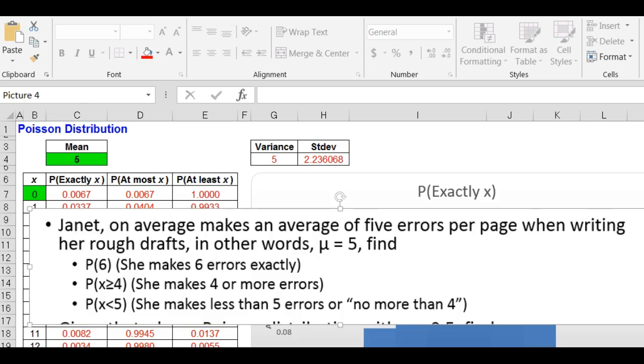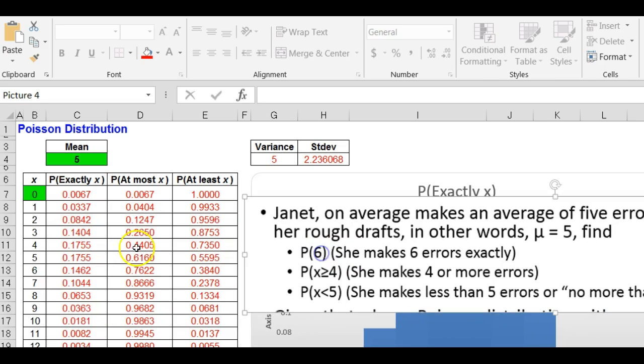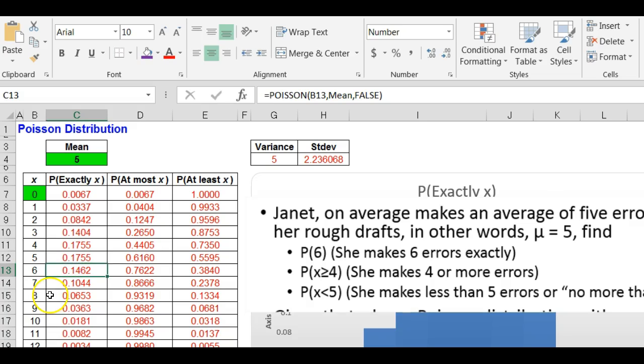Let's look at this question. Janet, on average, makes an average of five errors per page when writing her rough drafts. In other words, the mean equals five. I've already got that in there from the previous problem. Find the probability she makes exactly six errors. Right there: 0.1462.